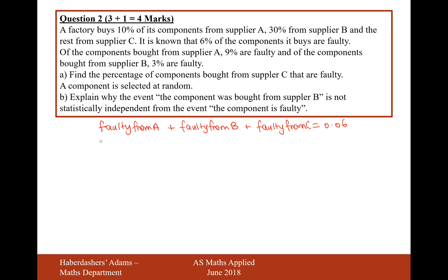To work out the proportion of faulty parts that come from A: 10% of the parts come from A, and the amount that are going to be faulty is 0.009. So that's 0.009 — that's the proportion of the 6% that comes from supplier A.